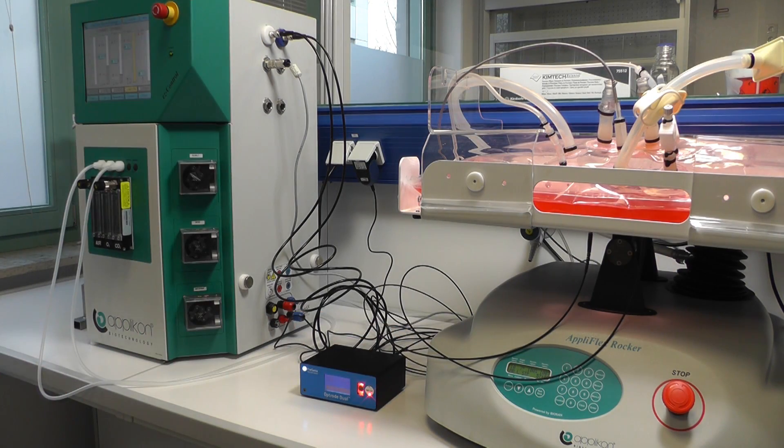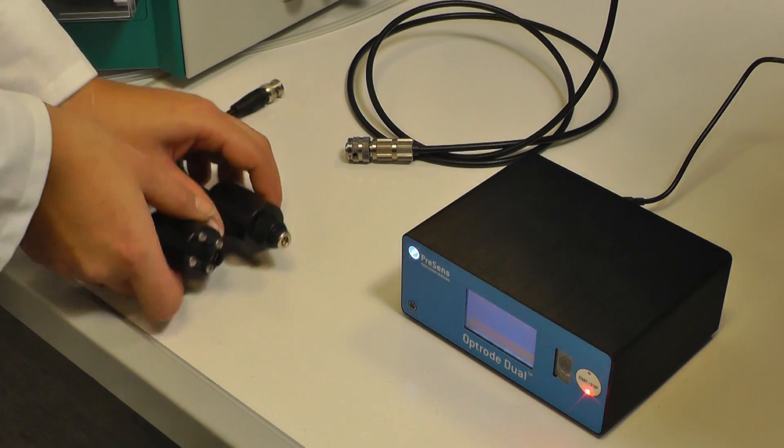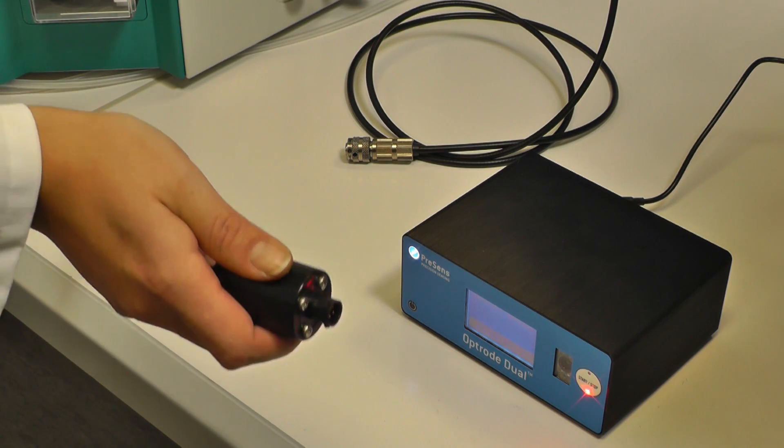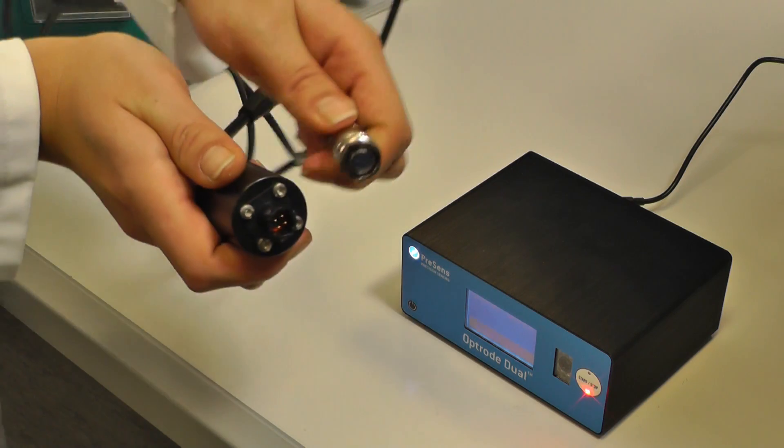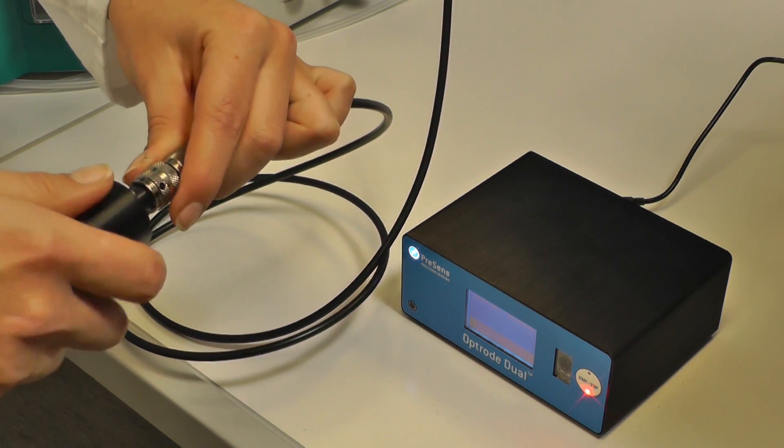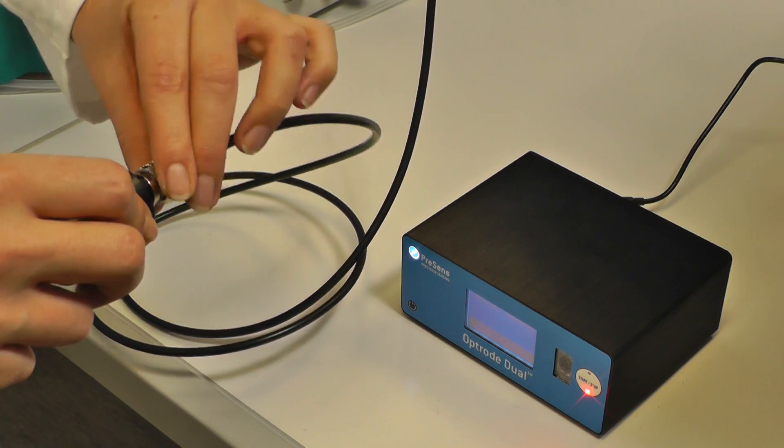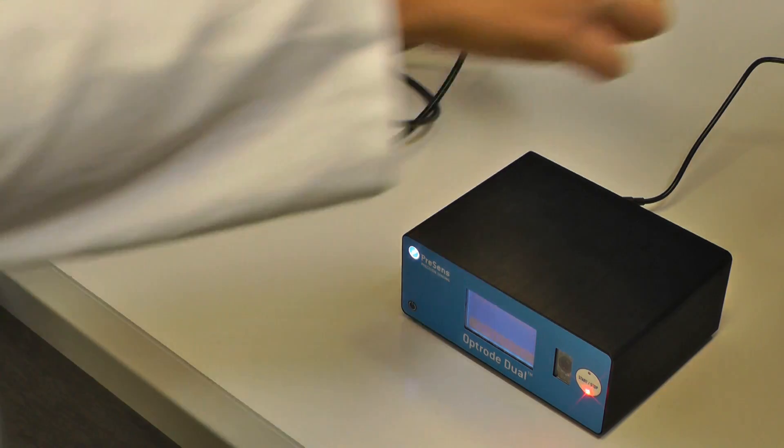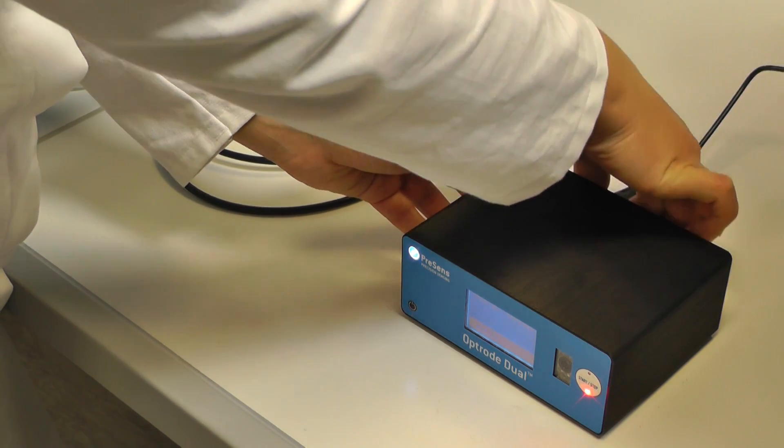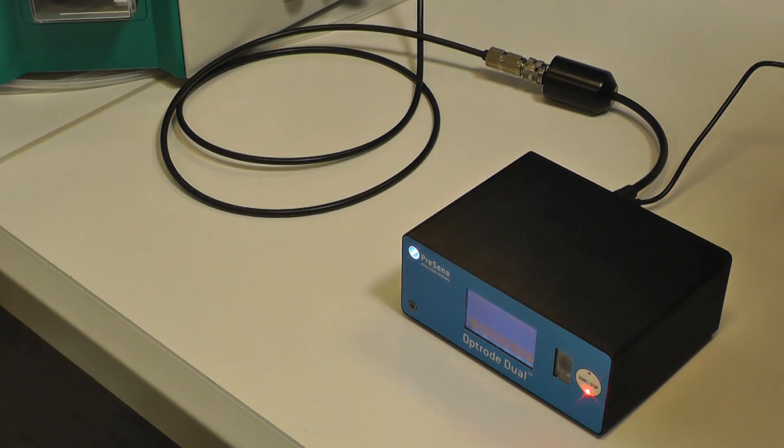For all other controllers which do not have BNC connectors for DO and PH input, PreSens supplies special adapter cables for PH and oxygen. Here we show how to connect the adapter for oxygen. Connect the respective electrode cable to the oxygen input on your controller and to the adapter cable as shown here. Then connect the adapter to the connector on the Optra Dual back panel.